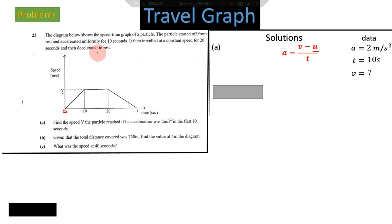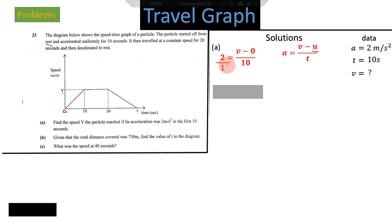Now substituting our values: the particle started from rest, so initial velocity u = 0. We cross-multiply: 2 multiplied by 10 gives us 20, and v minus zero is just v. So the final answer is v = 20 meters per second.